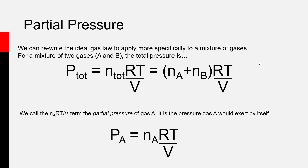And this leads us into something very powerful. Because the pressure exerted by a gas in a container with a known volume and at a specific temperature depends only upon the amount, if you have a mixture of different gases, you can actually break down the pressure contributions from each individual gas and then add those pressures up to give you the overall pressure exerted by the mixture. Let's talk about a generic mixture where we have two gases, A and B.